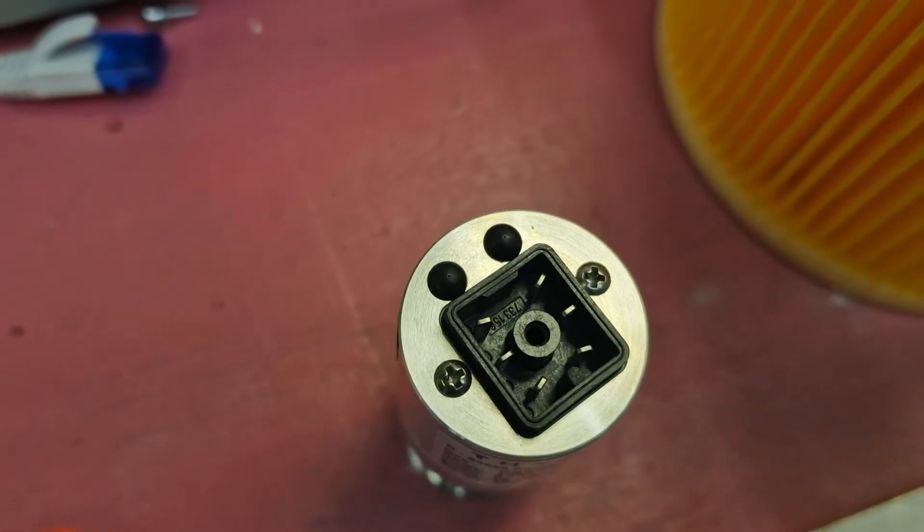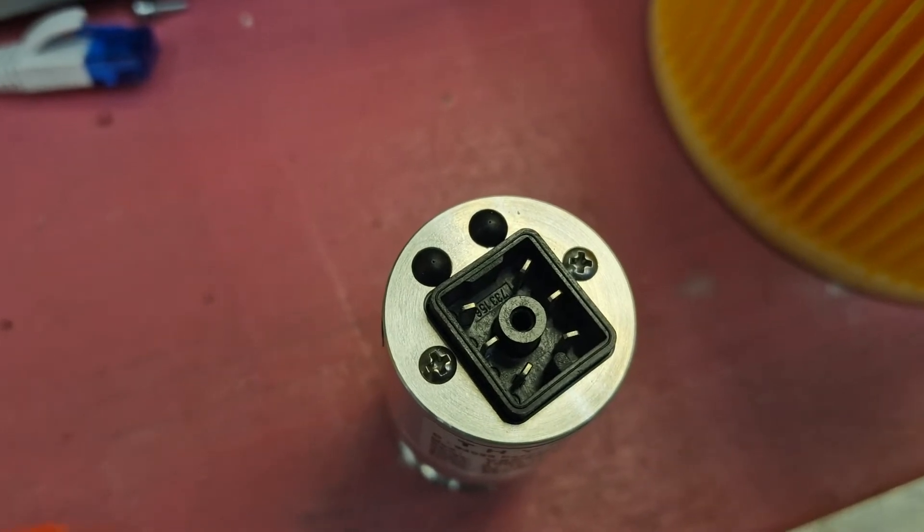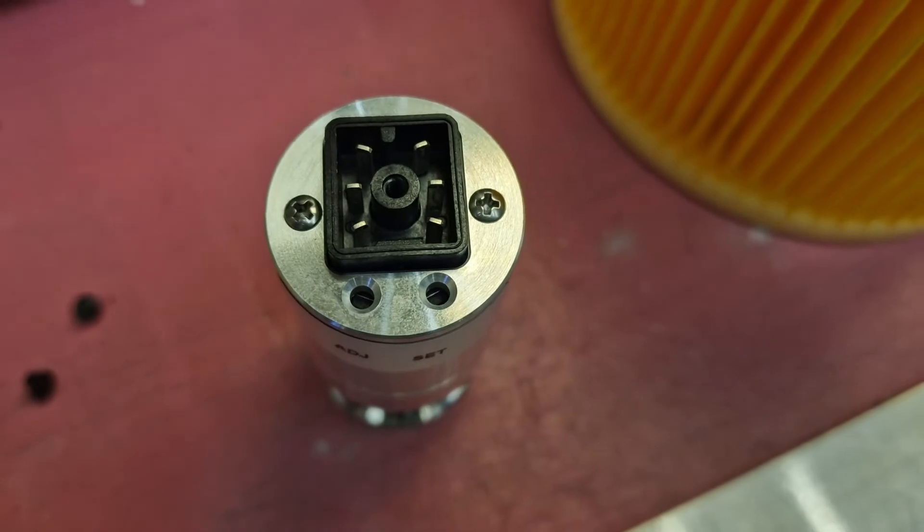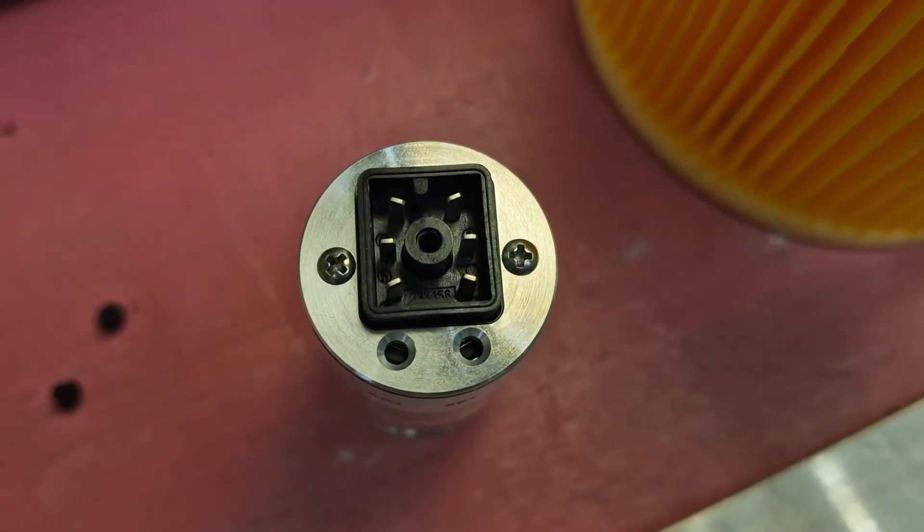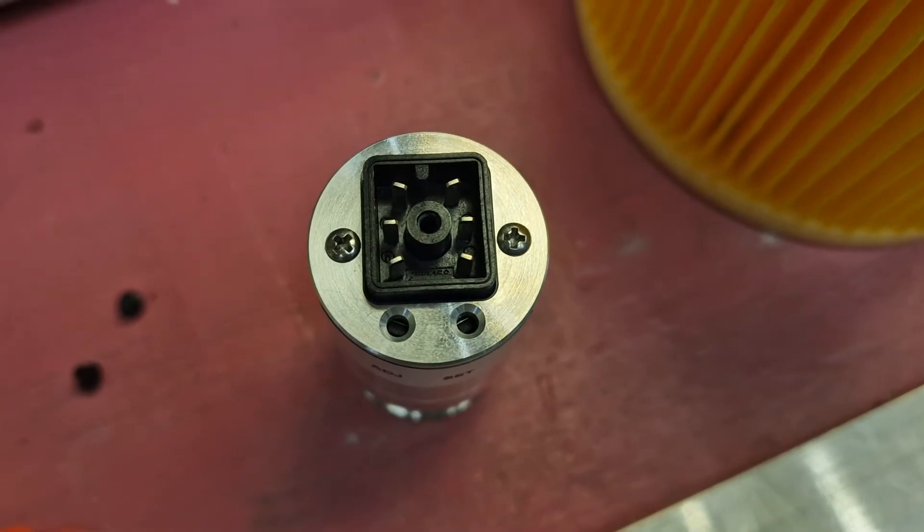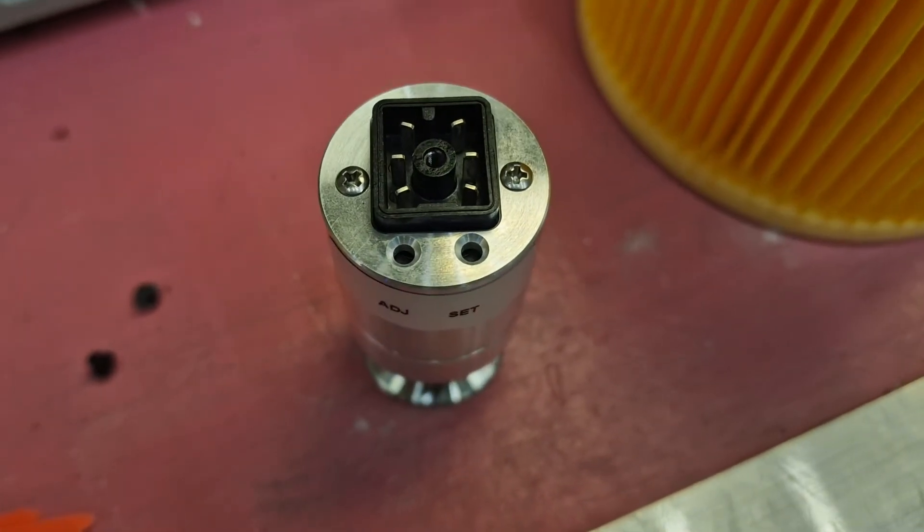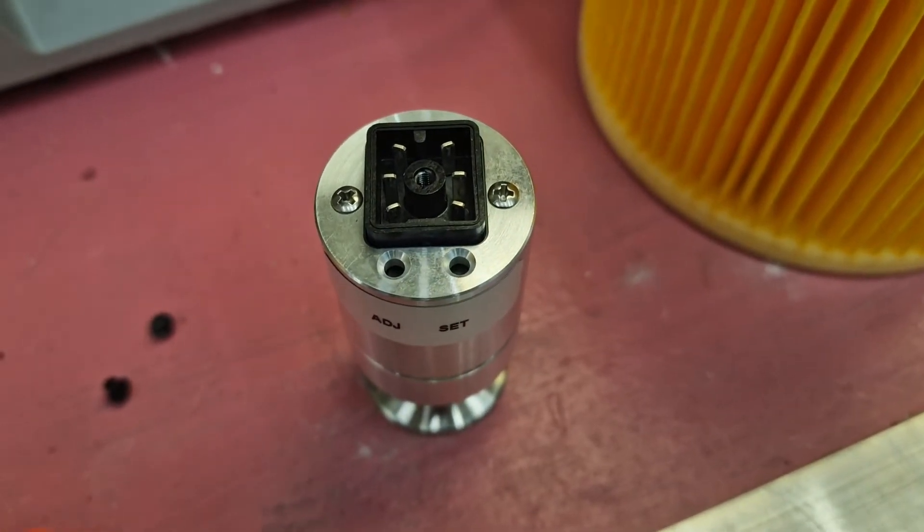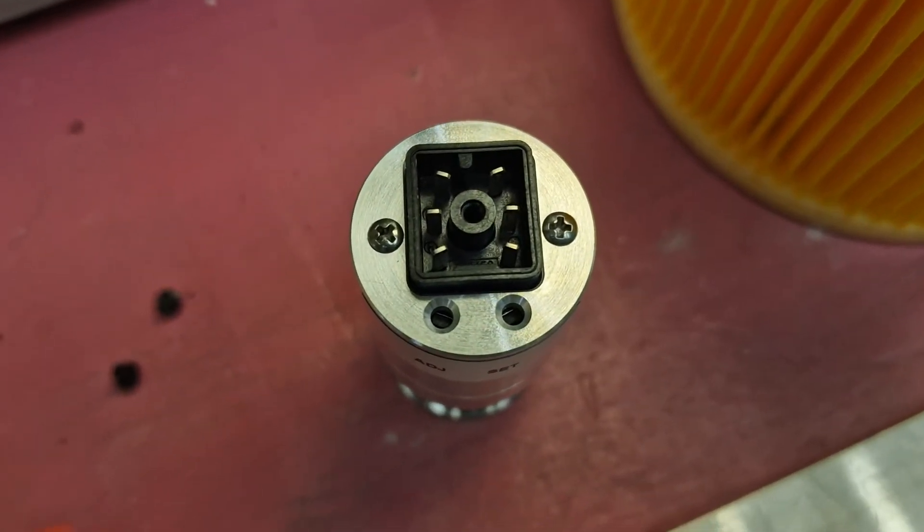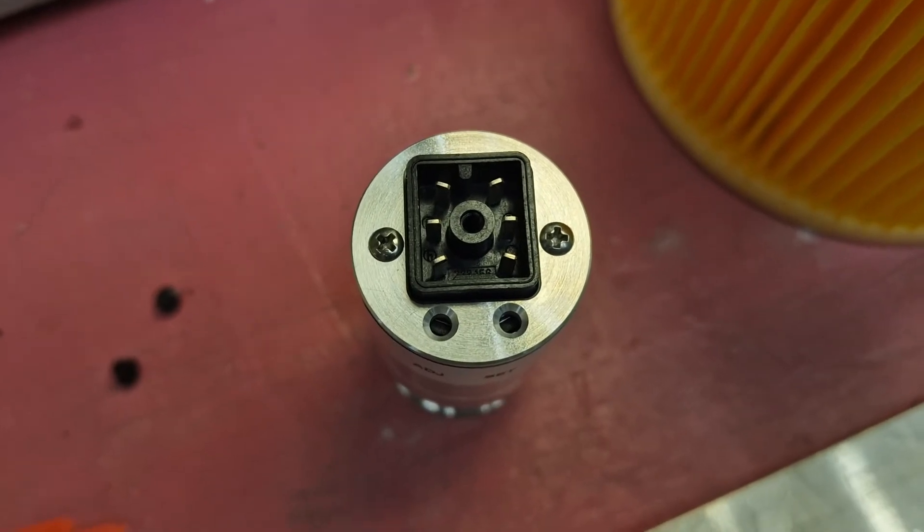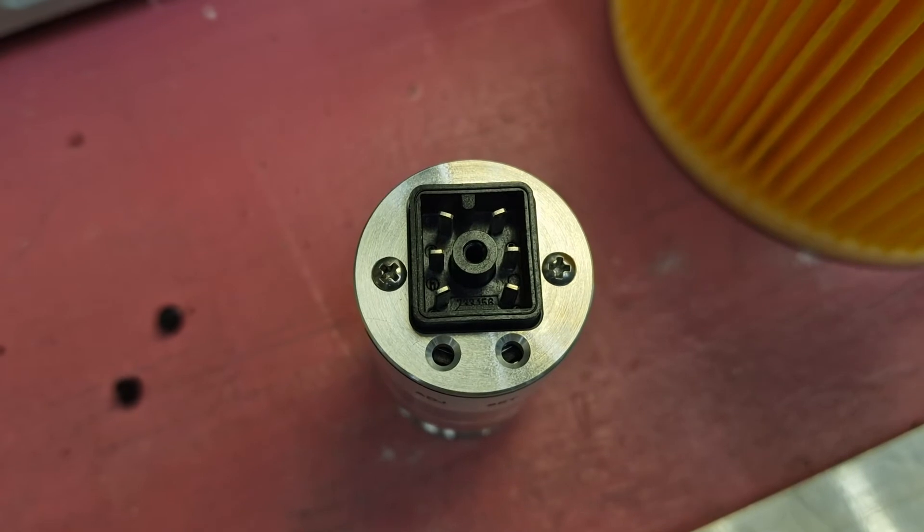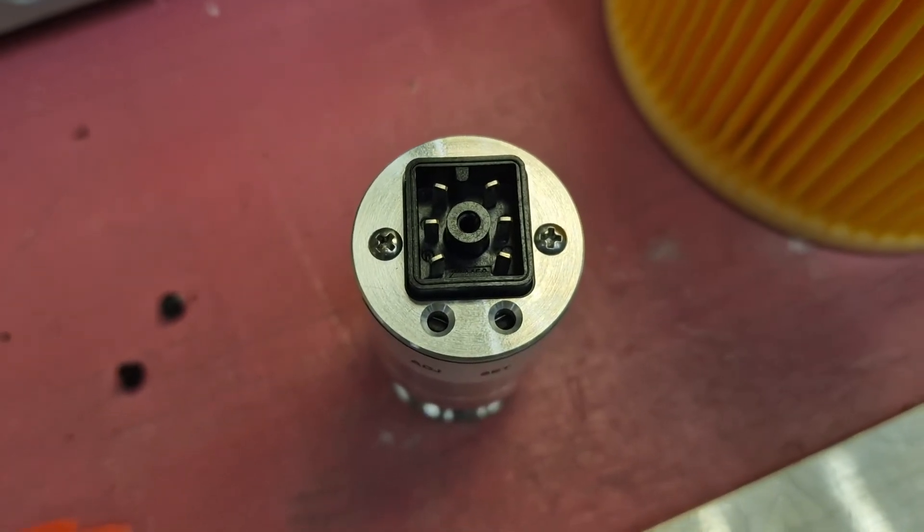If that didn't help then remove the two small black caps on the sensor and then inside the little buttons. With a small stick press for about five seconds the adjustment button. This will reset the sensor and it's another chance to make it work, otherwise it will have to be exchanged.